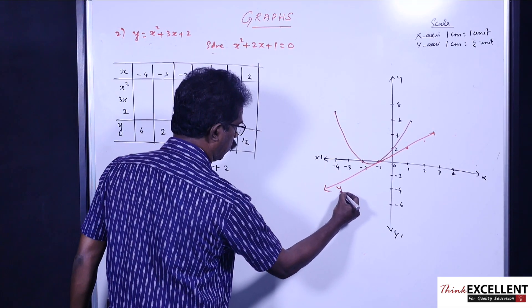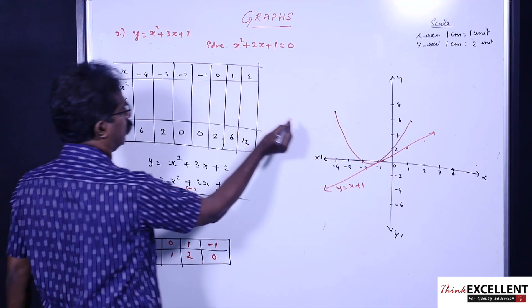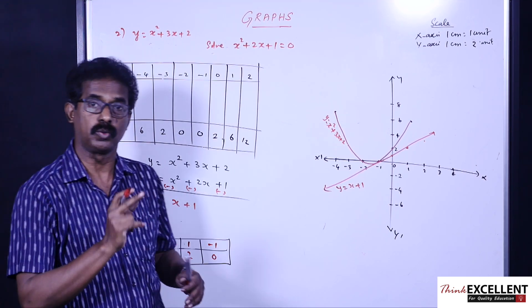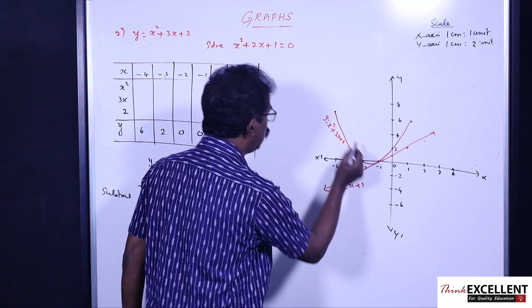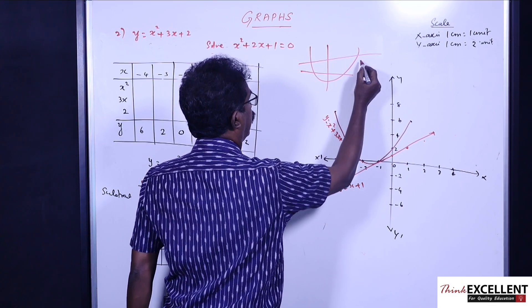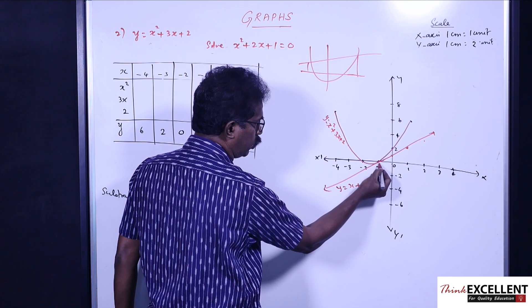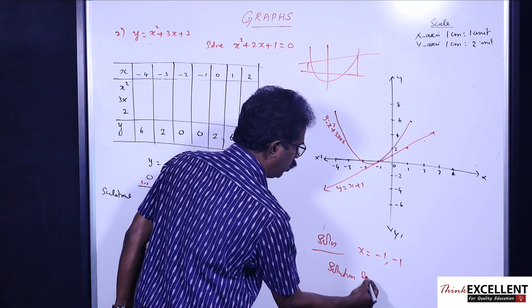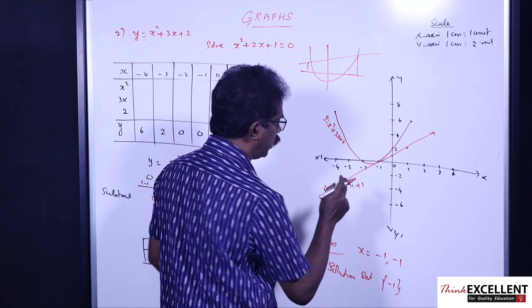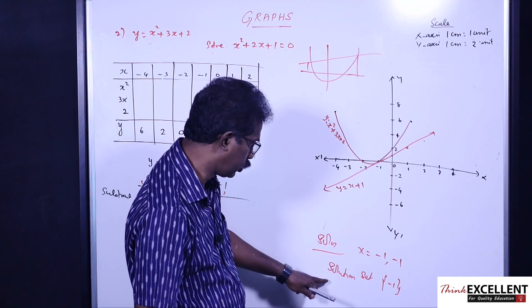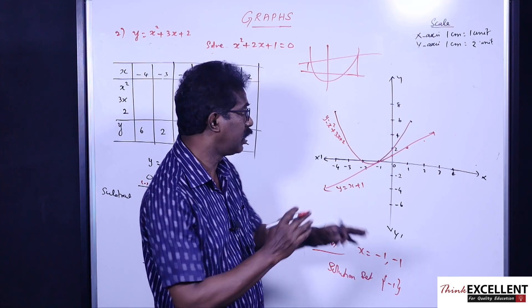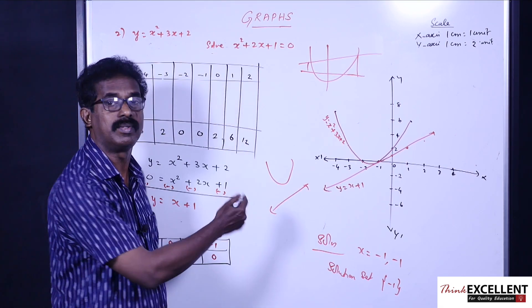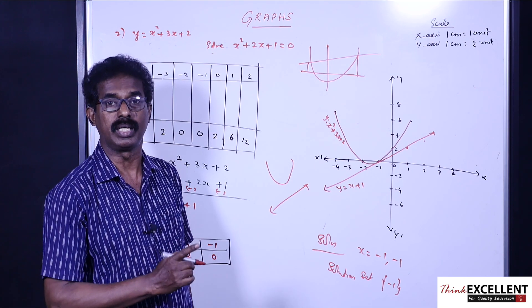This is the line y = x + 1 and this is the curve y = x² + 3x + 2. Unlike the previous question where the line cut the curve at two places, here the line touches the curve at only one point. From that point of intersection we would draw lines down, but since it touches at only one point, that itself is the solution: x = -1 (repeated root). The nature of the roots is real and equal, and the solution set is {-1}. Sometimes the line may not even touch the curve — in that case, the roots are unreal (no real roots).